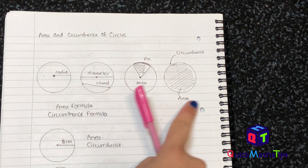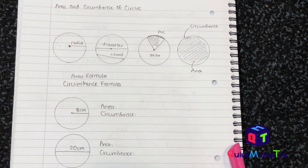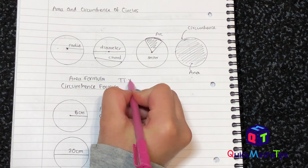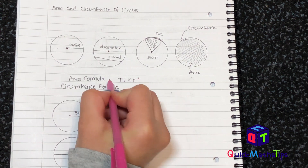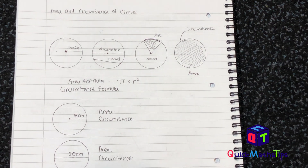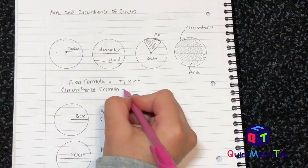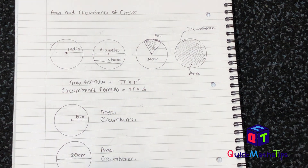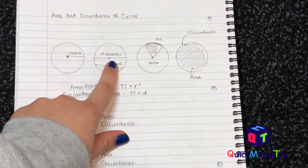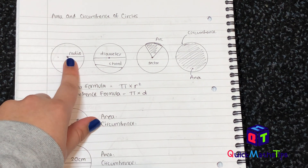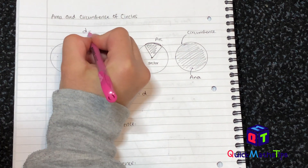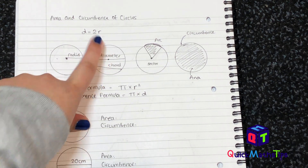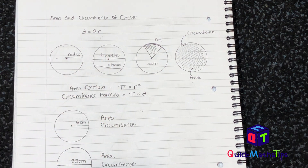Remember, the circumference is the crust all the way around the pizza. The formula to work out area is pi multiplied by radius squared. To work out the circumference, you're going to do pi multiplied by diameter. One thing you need to know is that diameter is twice as long as the radius, so diameter equals 2r. One diameter is equal to two radiuses — if you get a radius and double it, you will get your diameter.